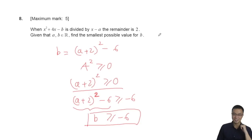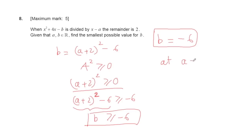The smallest possible value for b is -6, which occurs when a = -2. This completes the question.